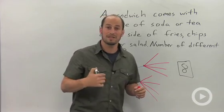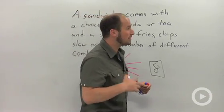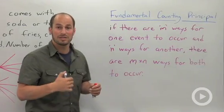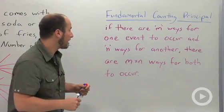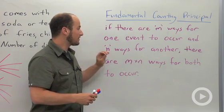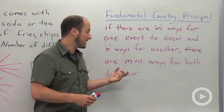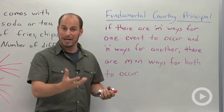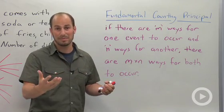So there's also what we can do called the fundamental counting principle. I'm not a huge fan of definitions, but I've thrown this one up here just so you can actually see how it works. So what it says is if there are m ways for one event to occur and n ways for another, then there are m times n ways for both to occur. So really, all you have to do is take the possible numbers of one outcome times the possible numbers of the other, and that's going to be your answer.